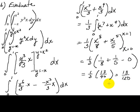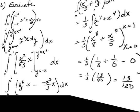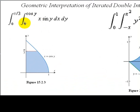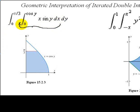Now let's talk about what these integrals represent. In the previous two examples we looked at two iterated double integrals, and I want to focus on what the bounds represent. For the integral on the left, the inner portion is integrated first with respect to x, meaning these are x values ranging from zero to cosine of y. The outer integral is taken with respect to y, so these are y values ranging from y equals zero to y equals pi over three.